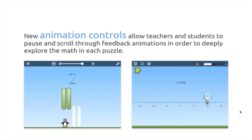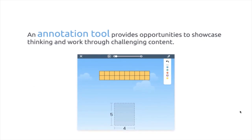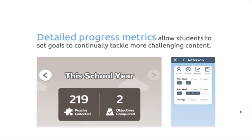We added animation controls that allow teachers and students to pause and scroll through the feedback provided — no triple clicking. We added an annotation toolbar, which provides an opportunity for a student to showcase their thinking through challenging content, as well as allows a teacher to model up front for whole group or small group. The new detailed progress metrics allow students to set their own goals to continually tackle more challenging content. The new version introduces an improved way to measure student progress using puzzles and minutes. Students see their logins, the minutes they complete, and the puzzles they collect, allowing for more accountability for the student and teacher to see their progress in real time.